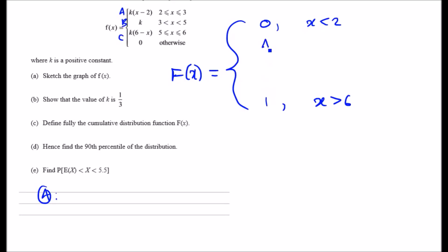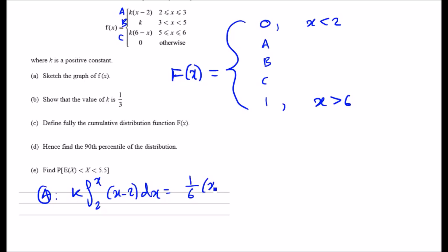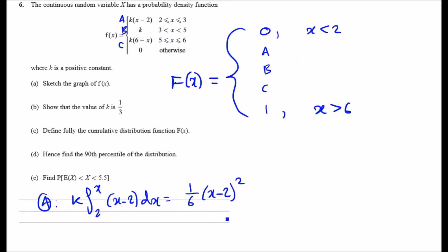For piece A (interval 2 to 3), integrate k times (x minus 2) from 2 to x — remember k is one third. After integrating, you get one sixth times (x minus 2) squared. So piece A is (1/6)(x minus 2)² evaluated with the given limits.